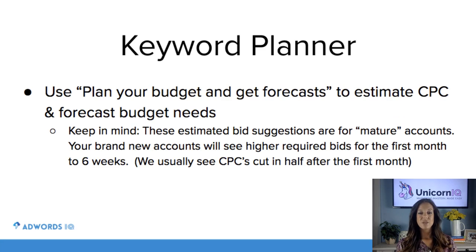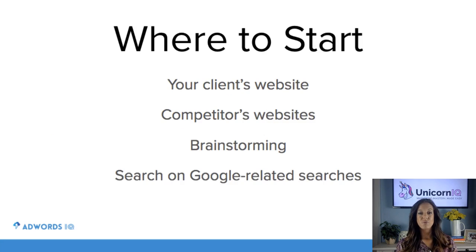To give you an idea of where to start with your brainstorming: you can go to your website, your client's website, competitors' websites, you can brainstorm on your own, or you can even use the related searches at the very bottom of a Google search page. You can use the terms that appear when you do a search for your main keyword — it'll give you a whole bunch of related searches. That's a really helpful place to go as well.